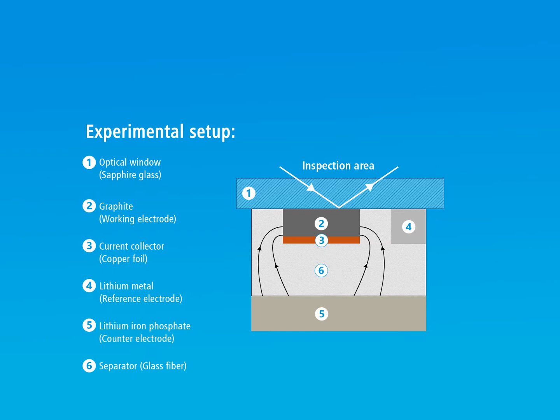A graphite electrode strip, item number 2, is used as a working electrode. A disc-shaped lithium iron phosphate electrode, item number 5, is used as a counter electrode. And a piece of lithium metal foil, item number 4, is used as a reference electrode.